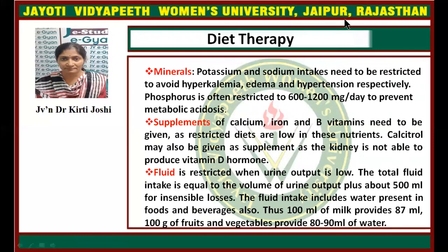Minerals like potassium and sodium intakes need to be restricted to avoid hyperkalemia, edema, and hypertension respectively. Phosphorus is often restricted to 600 to 1,200 mg per day to prevent metabolic acidosis. Supplements of calcium, iron, and vitamin B are needed as restricted diets are low in some essential nutrients. Calcitriol may also be given as a supplement as the kidney is not able to produce vitamin D hormone.